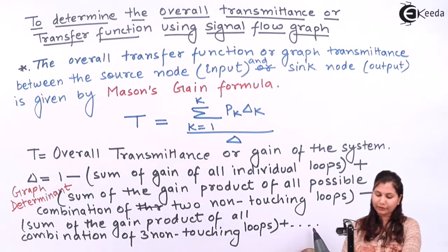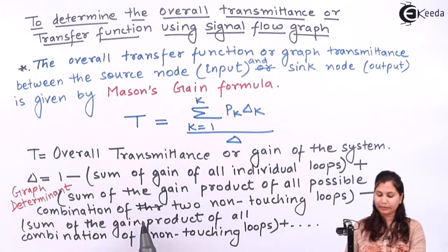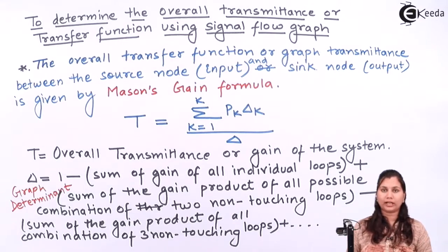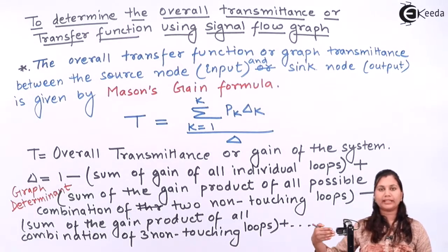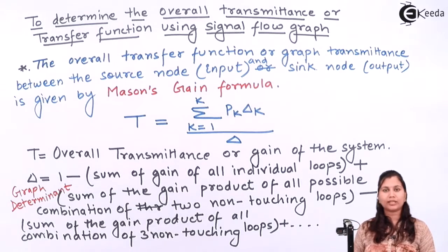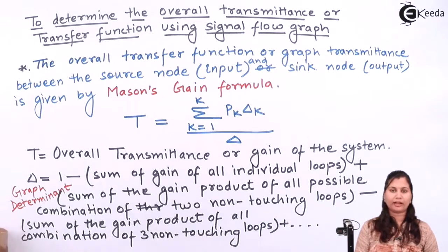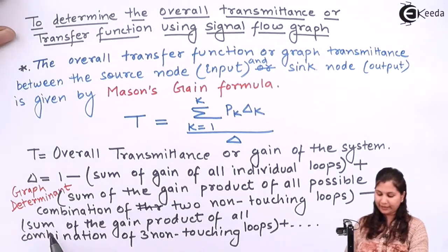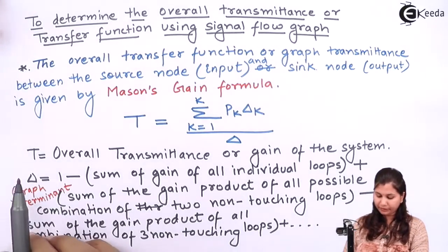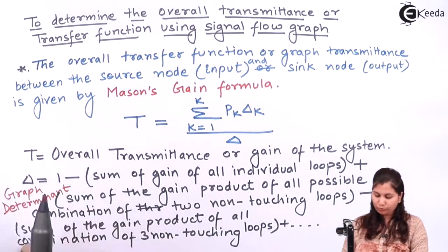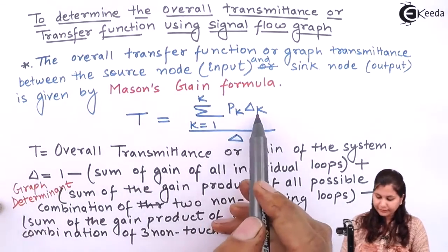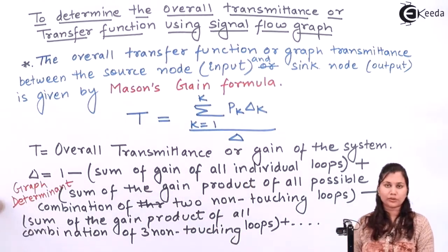After that, you take the sum of the gain products of all combinations of four non-touching loops, then minus five non-touching loops, and so on. In this way you find the value of Δ. So Δ is the graph determinant.